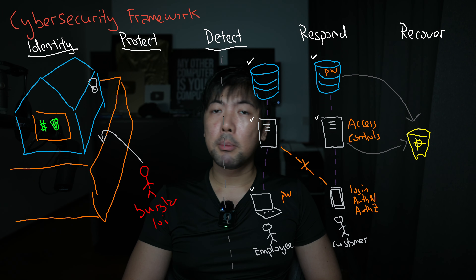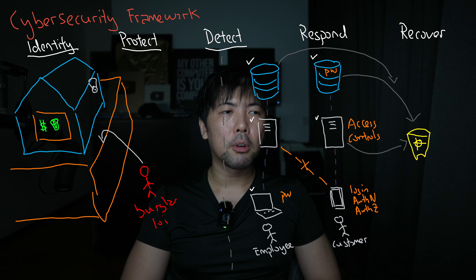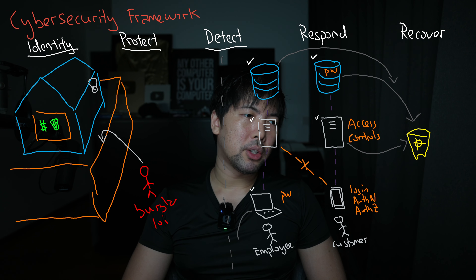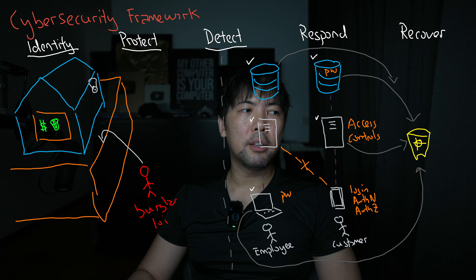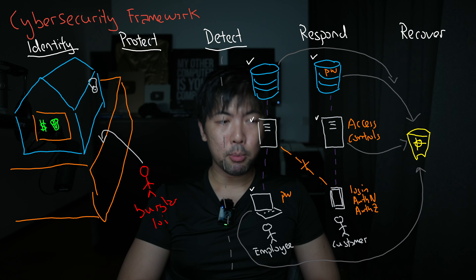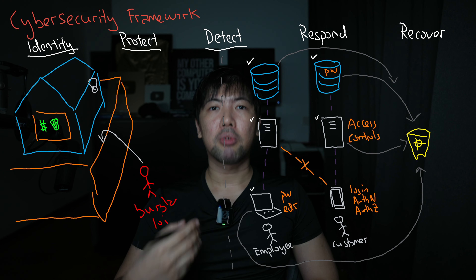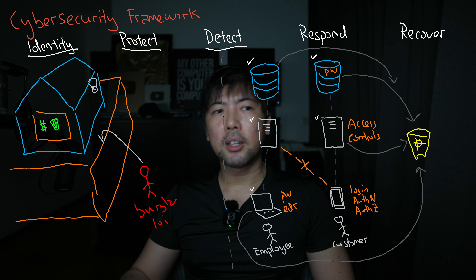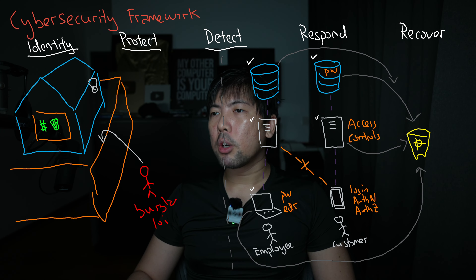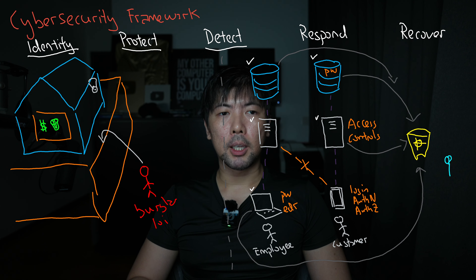Servers and other systems all send log information into the security monitoring system. For end-user machines, something like an antivirus or next-generation antivirus — called Endpoint Detection and Response (EDR) — can be installed on employees' machines to detect threats, such as a malicious file or attachment that was downloaded. Those detections are highlighted in the security monitoring system, where a security analyst reviews all the different events occurring.